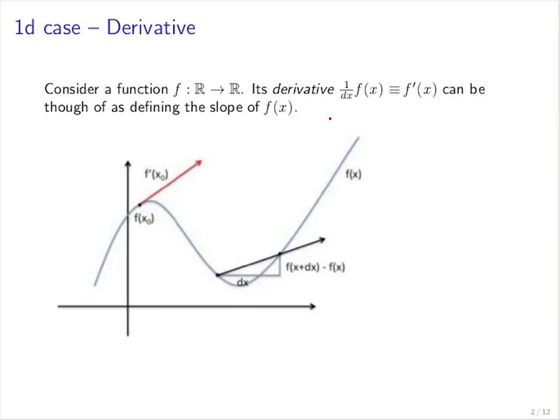So in the 1D case, which means we assume that we have a function f that's mapping from the real numbers to the real numbers, we have this concept of derivative of f, which is denoted by f'(x). And the derivative of f is usually thought of as the slope of the function at the position x.